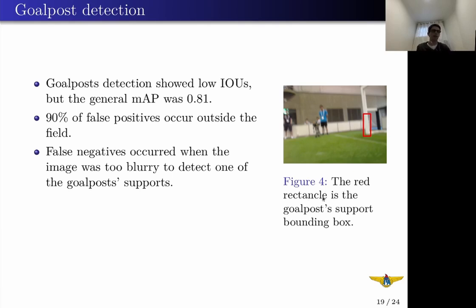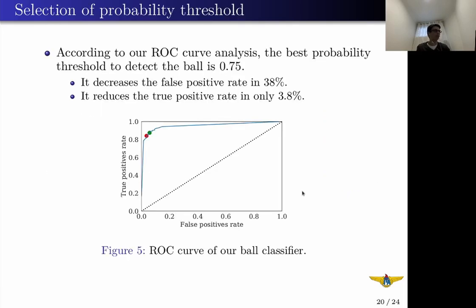At Figure 4, there is a correctly identified goalpost support. We sought to identify the best cost-benefit of classification performance and adjust the probability threshold correctly. We built a receiver operating characteristic curve, the ROC curve, to identify the probability that minimizes false positives while maintaining a high number of true positives. The probability threshold of 0.75, shown as the red dot on this graph, is better than our empirical estimate of 0.3, the green dot. It decreases the false positive rate by 38% and the true positive rate by only 3.8%. Accounting for all objects, the results are less expressive, but we highlight that goalpost detection is still secondary in this research.